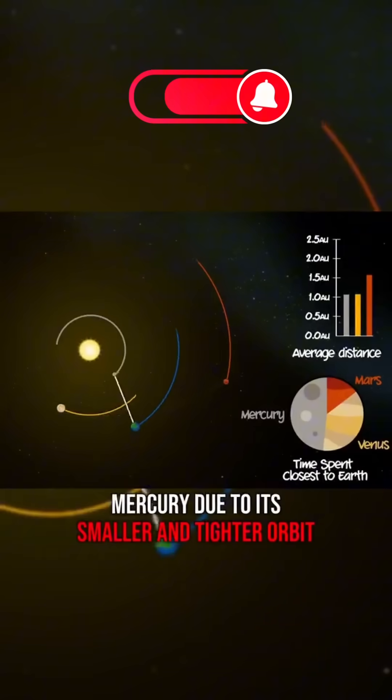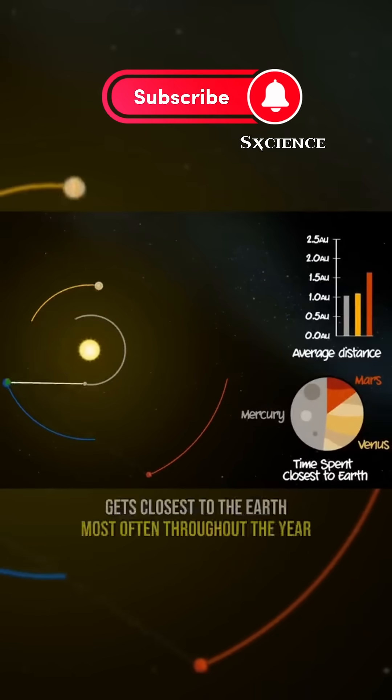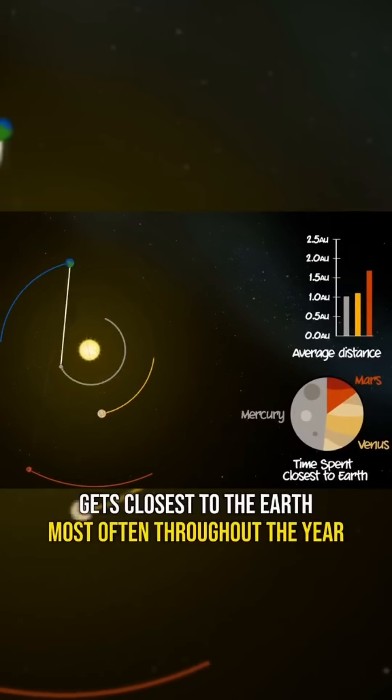However, Mercury, due to its smaller and tighter orbit, gets closest to the Earth most often throughout the year.